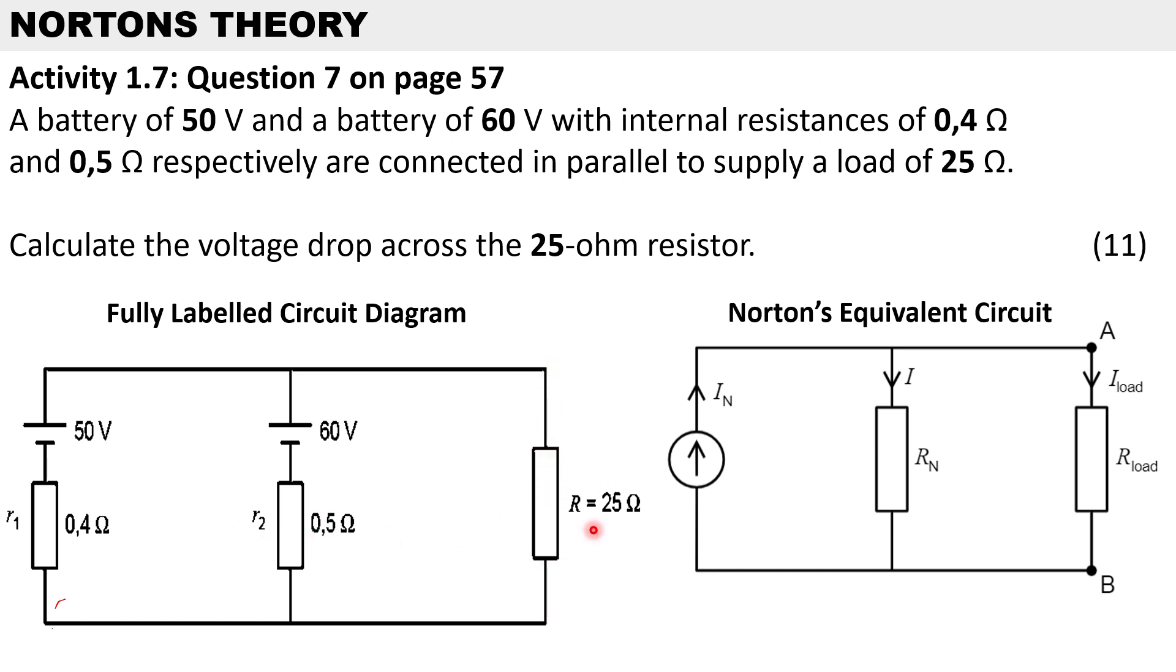To do our calculation we can use Norton's equivalent circuit to help us. We have a single current source replacing the voltage sources and a single resistor known as Norton's resistance that replaces the resistors in the circuit, and that's connected in parallel to the load resistor.